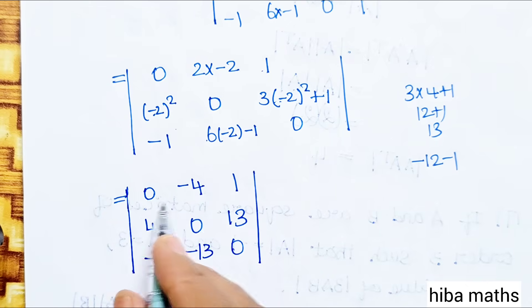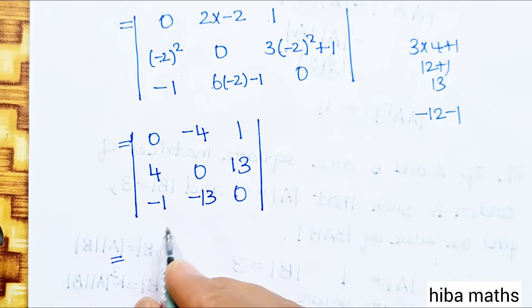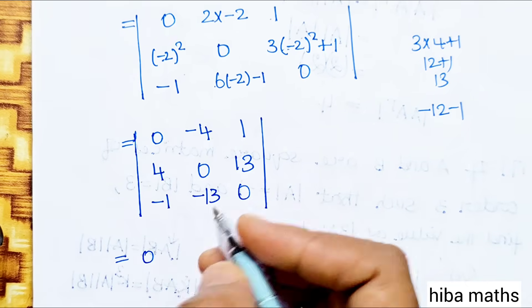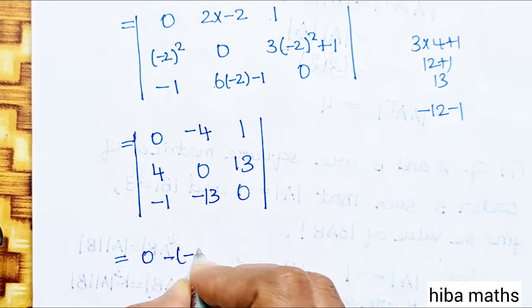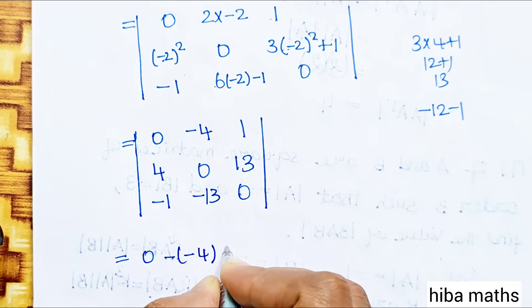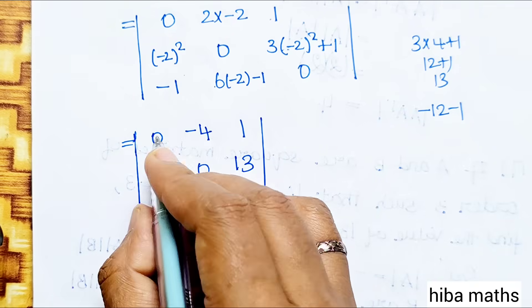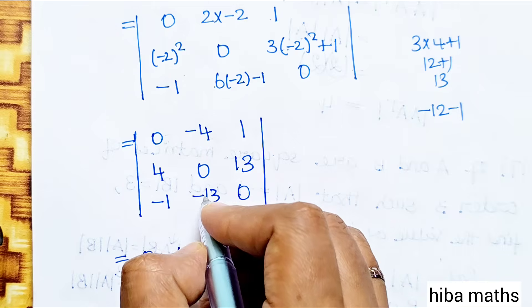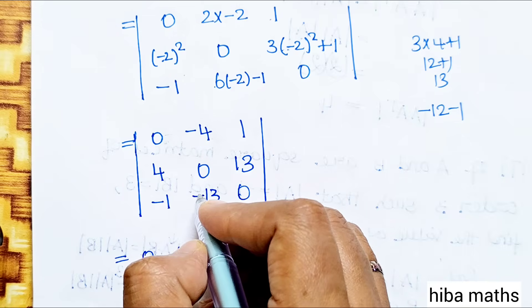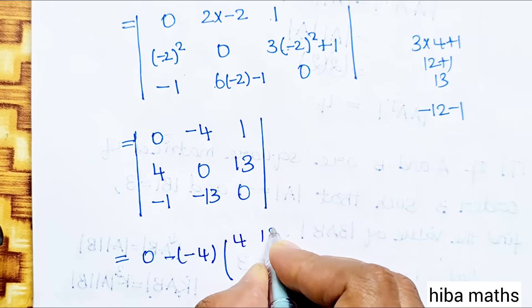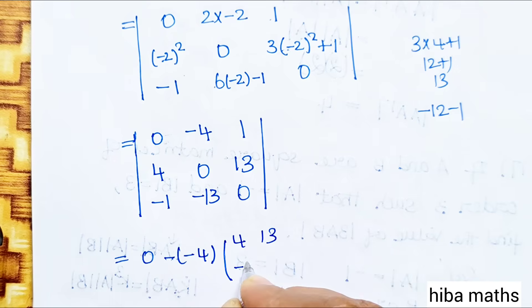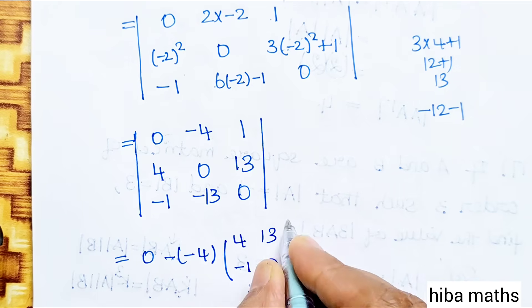Now we expand along the first row. The first element is 0, so that term is 0. The second element gives minus of (−4) into the 2×2 minor from the first row second column, which involves entries 4, 13, −1, 0.